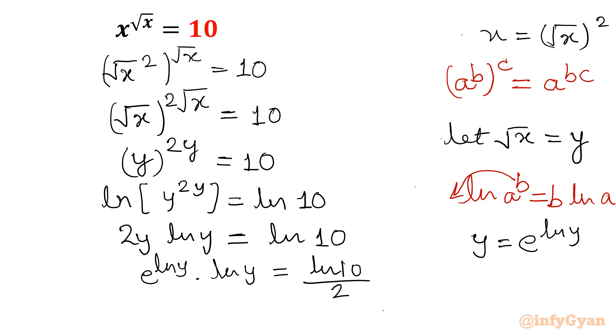Now it is recalling the form of the lambda w function. Let me write in the appropriate order: ln y times e raised to the power ln y equals ln 10 over 2. Now it is recalling lambda w function, that is, if function is in this form k e raised to the power k equals suppose a, then it is the form of product log form.